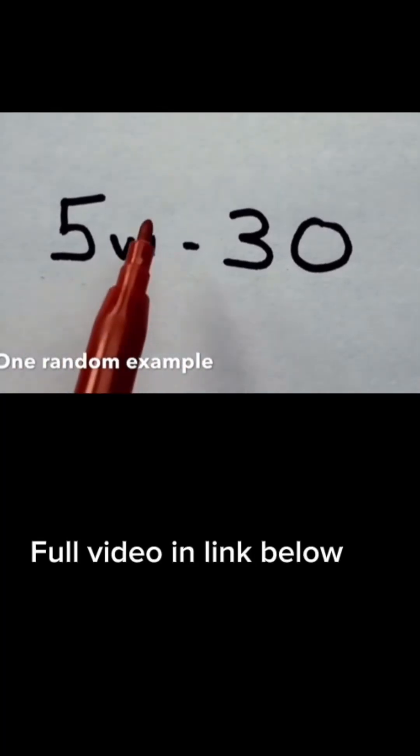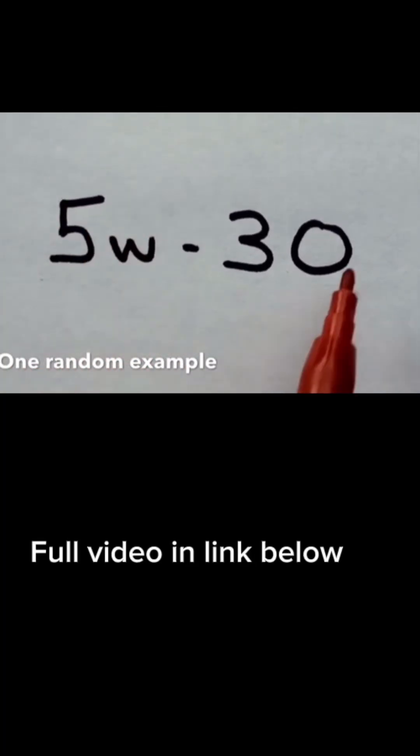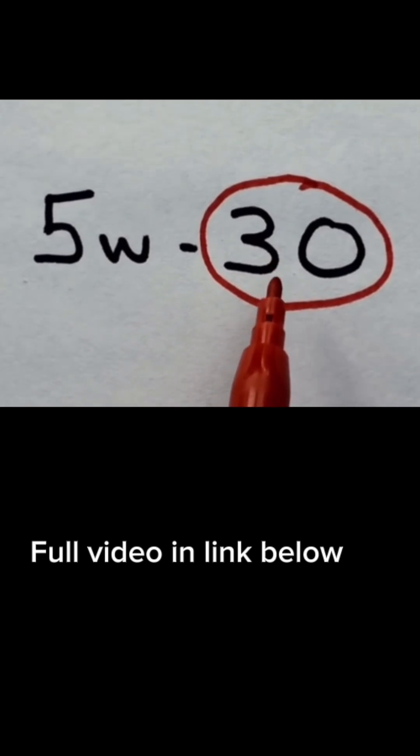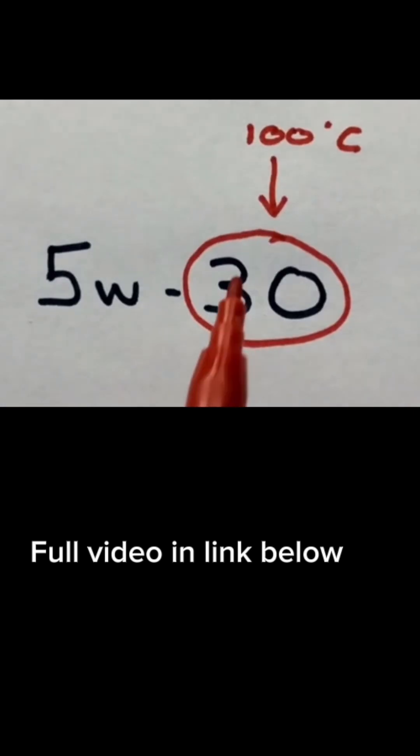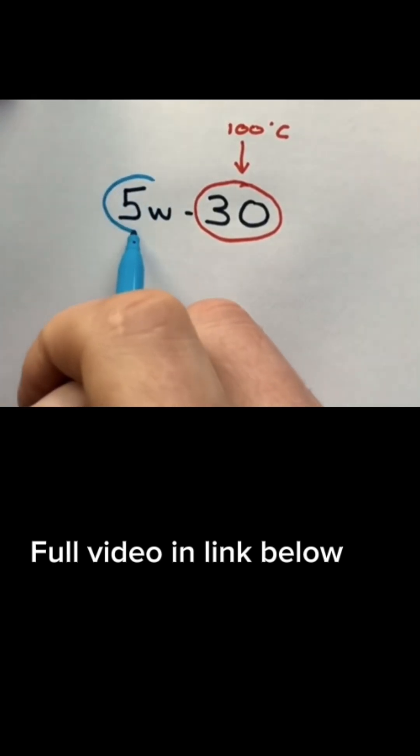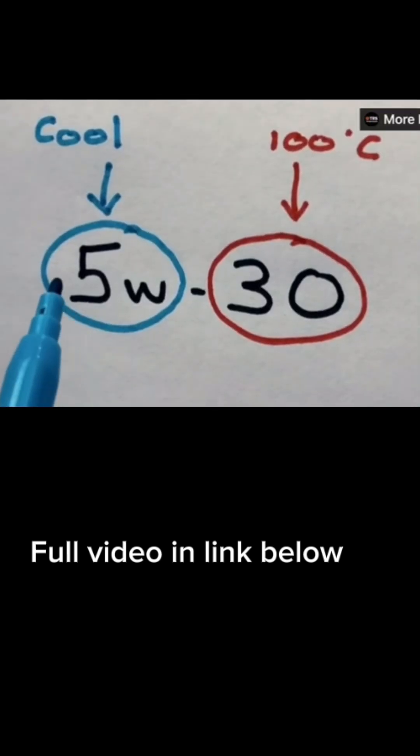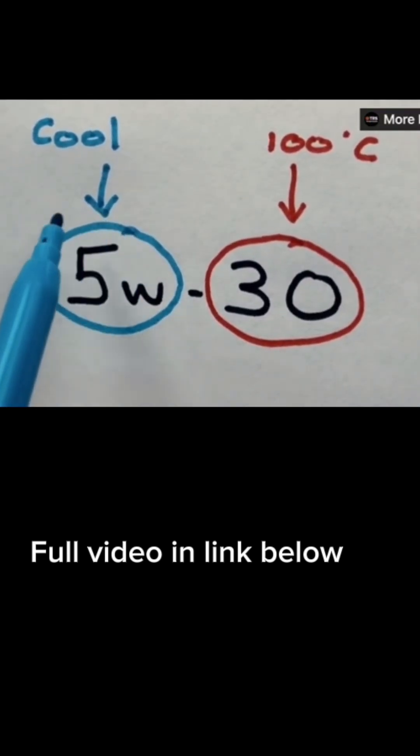Looking at 5W30, we've got two sets of numbers: the 5W and the 30. This number relates to how the oil performs at 100 degrees centigrade, and this number relates to how the oil performs when the oil's cool.